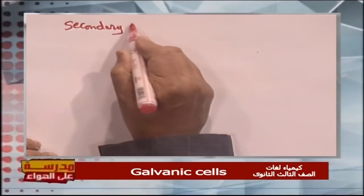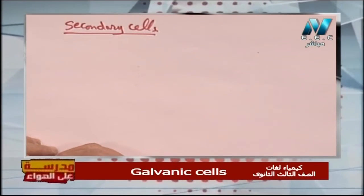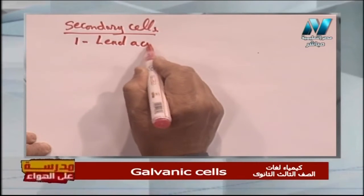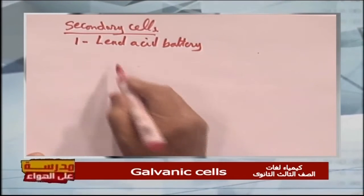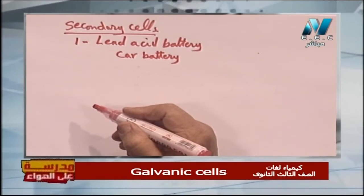Number two — secondary galvanic cell, which can be recharged again. Secondary galvanic cells have a spontaneous, reversible reaction and can be recharged, such as the car battery and the lithium-ion battery found in mobile phones. The car battery is also called the lead-acid battery. We call it a car battery because its most famous use is in cars, and it contains lead and acid.